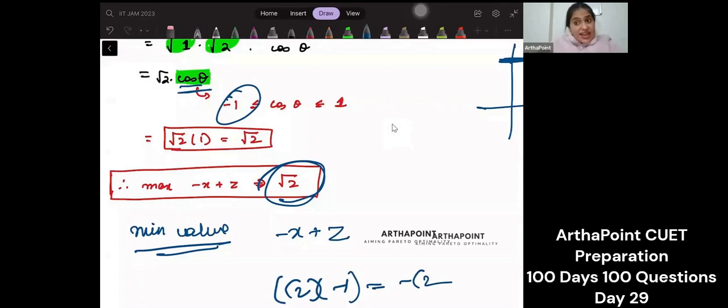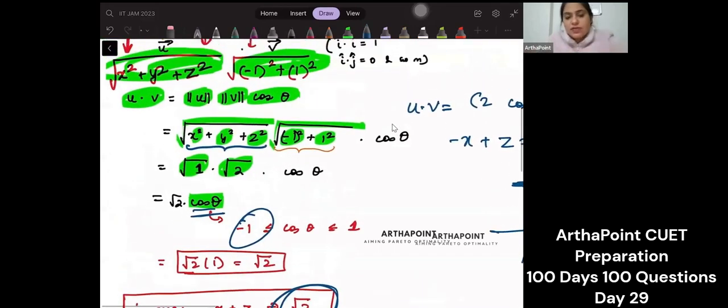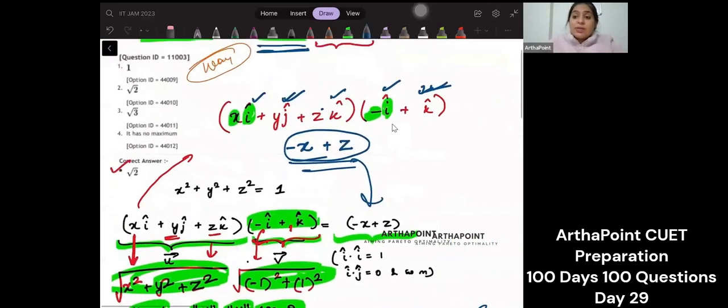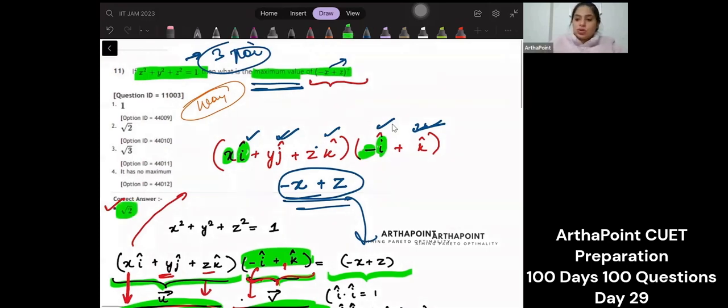So this is an excellent question because, I mean, you think if you can think of doing it another way, but because this is a three parameter value given and I have to maximize a two parameter value using vectors makes it very simple. So the answer to this question will be root two.